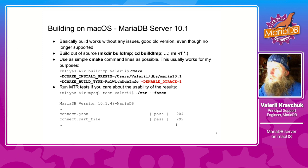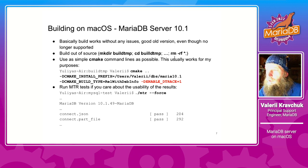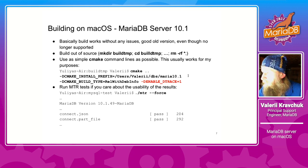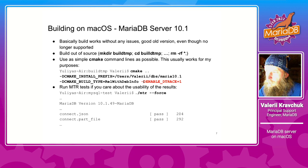You should follow some sane practices for building from source: build out of source, create a separate directory, and clean up when you switch to a different branch. I would also suggest using as simple a CMake command line as possible. In my case, I had at least two things to change for sure. First, I wanted my versions to coexist, so I used different prefixes for different major versions of MariaDB. Another reason to proceed with macOS was to use dtrace and specifically user-defined static dtrace probes, so I use WITH_DTRACE enabled in all my builds.